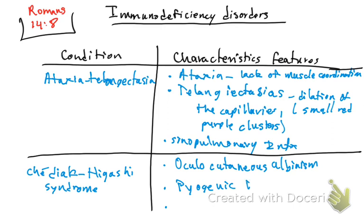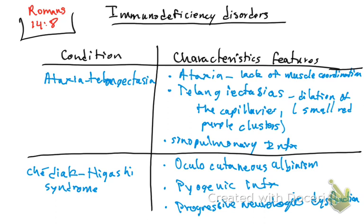The second characteristic is pyogenic infections — bacterial infections. And the third is progressive neurologic dysfunction. This condition affects the nervous system, the immune system via pyogenic (bacterial) infections, and the skin. So if you see a patient with infections, skin findings, and neurologic symptoms, you need to think of Chediak-Higashi syndrome.